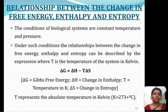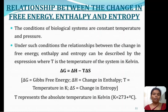Under conditions of constant temperature and pressure found in biological systems, the relationship between the change in free energy, enthalpy, and entropy can be described by the equation: delta G equals delta H minus T delta S. Where delta G is Gibbs free energy, delta H is change in enthalpy, delta S is change in entropy, and T is the absolute temperature in Kelvin, where K equals 273 degrees plus or minus Celsius.